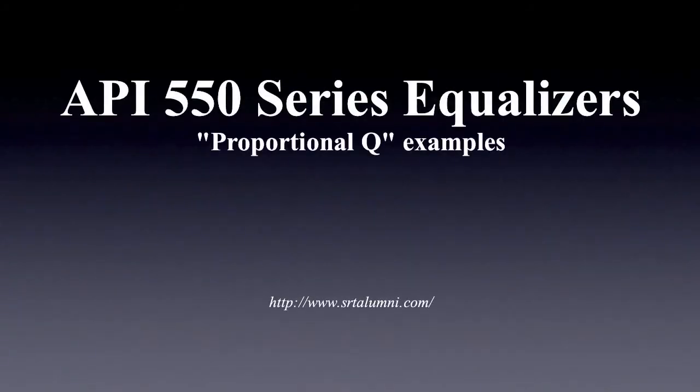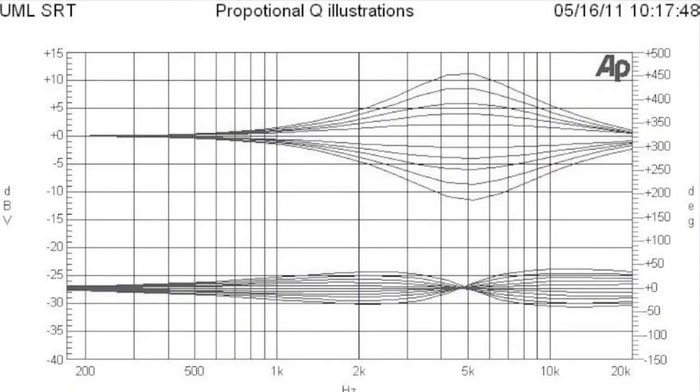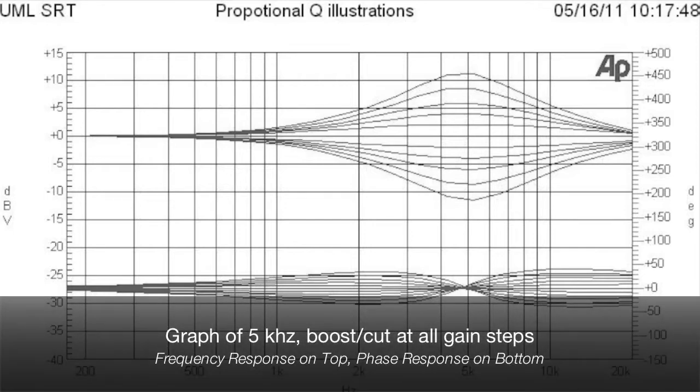One quality of the API 550 series EQs is their proportional Q, which narrows the bandwidth of the filter as the gain increases or decreases substantially. So at the first prescribed gain step of plus or minus 2 decibels, the filter is quite wide, and when you progressively get more boost or cut all the way to the final prescribed gain step of plus or minus 12 decibels, the filter becomes quite narrow, like a notch.